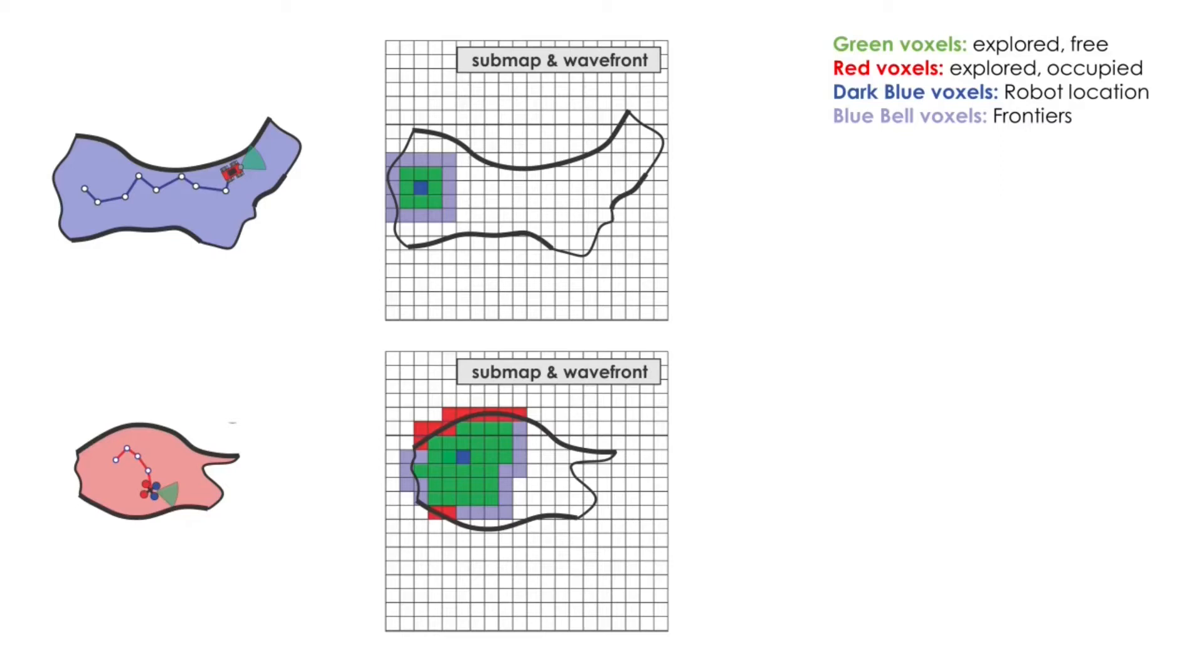In this visualization, green voxels represent mapped free space, red are used for mapped occupied areas, dark blue for the location of the robot, and blue-violet for the frontiers.